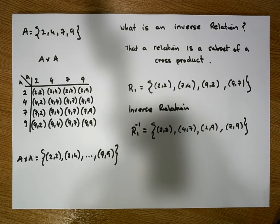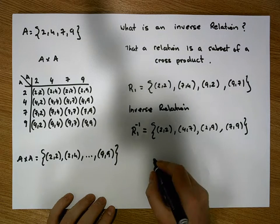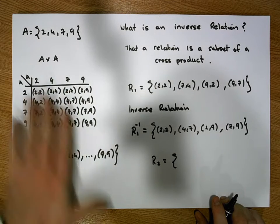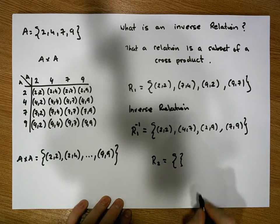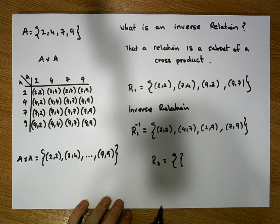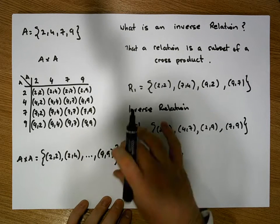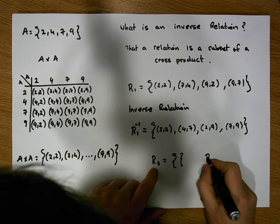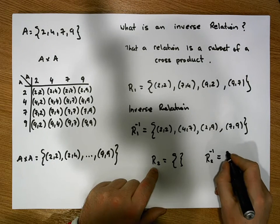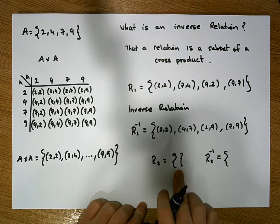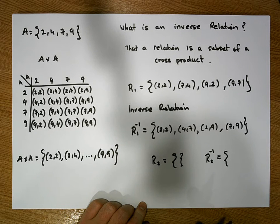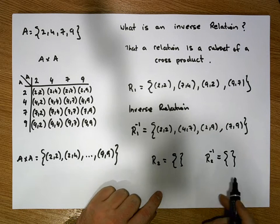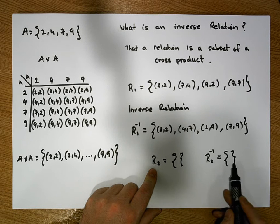One other relation to keep an eye on is a special relation. Let's say R2 is equal to the empty set — it contains no ordered pairs. This is an unusual relation. It is a subset of the cross product because the empty set is a subset of all cross products. To calculate R2 inverse, we need to take all the ordered pairs and flip them, but there are no ordered pairs to flip, so there'll be none in this set. The inverse of the empty set is the empty set.